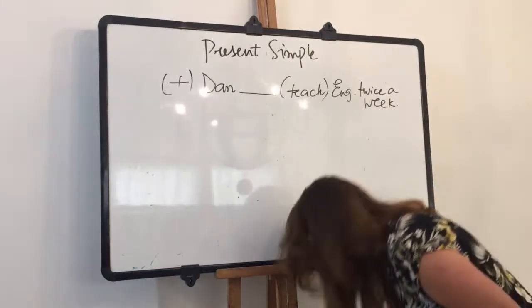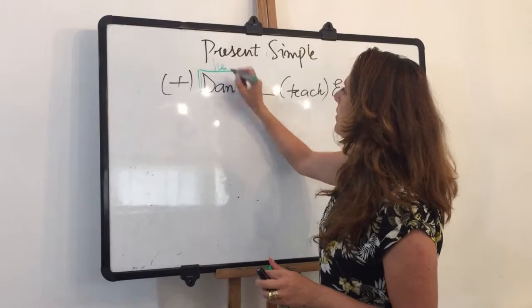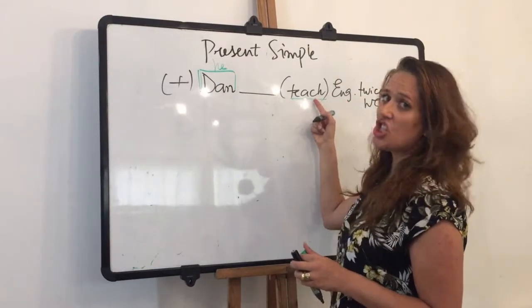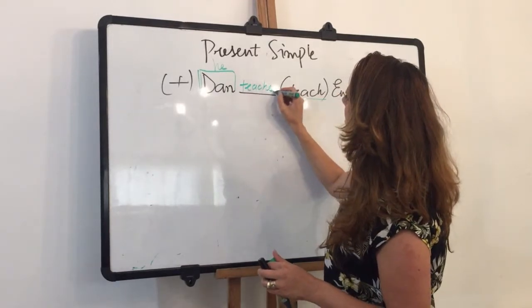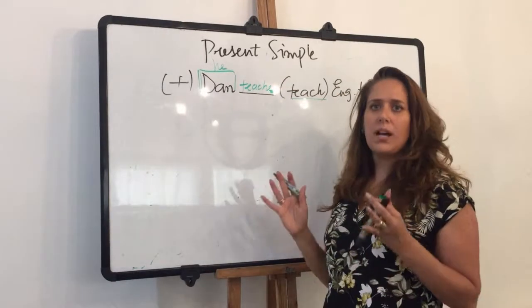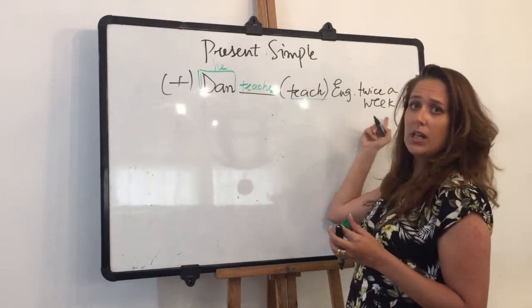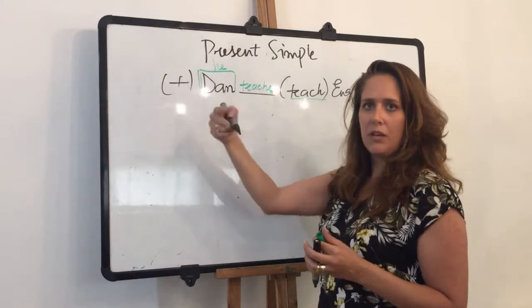Dan would be my subject and it would be he. Teach would be my verb and it ends with CH. That's why it gets ES. So my positive sentence would look like he, Dan teaches English twice a week. It shows me that it's present simple because it happens two times a week, every week.